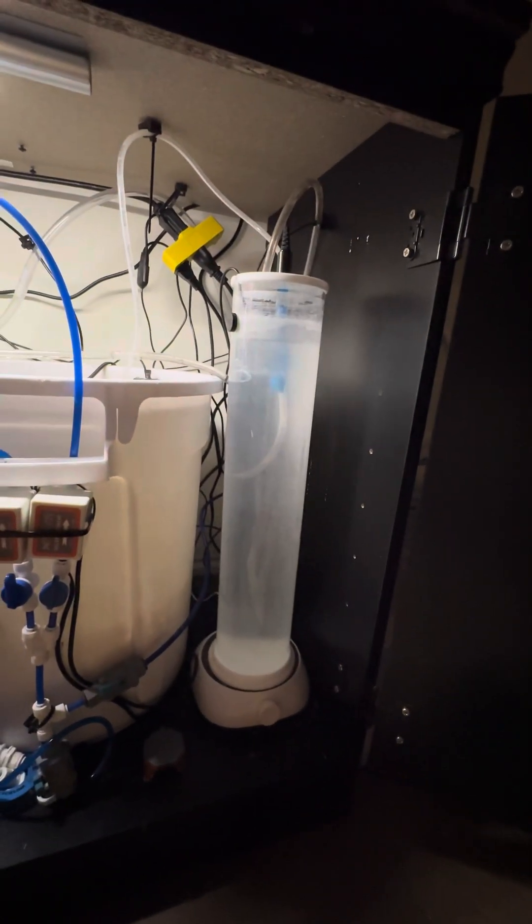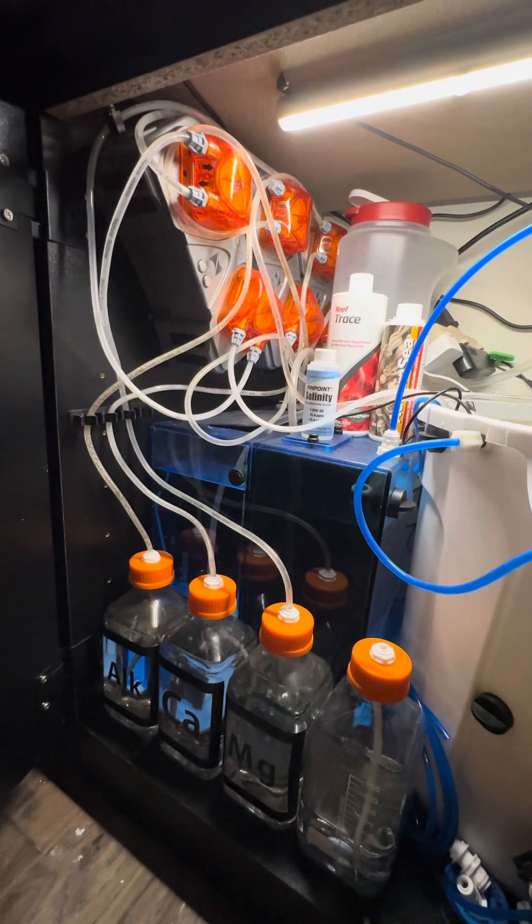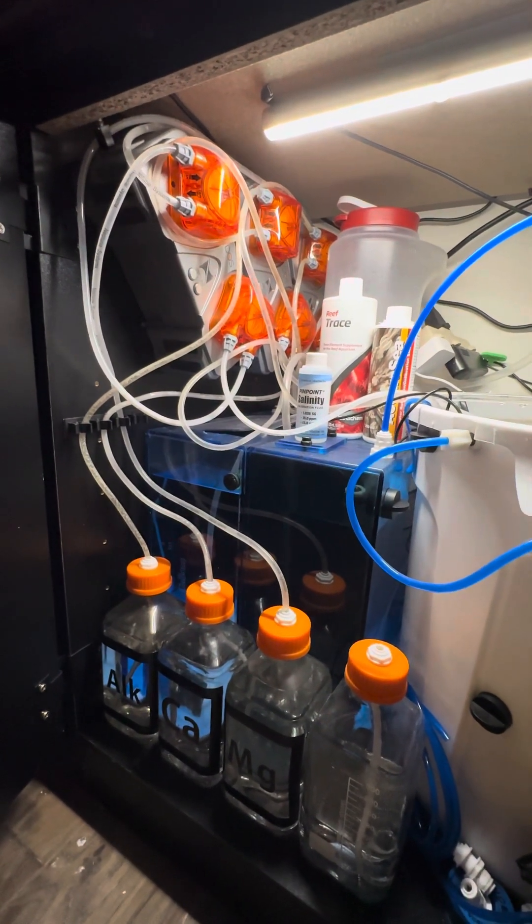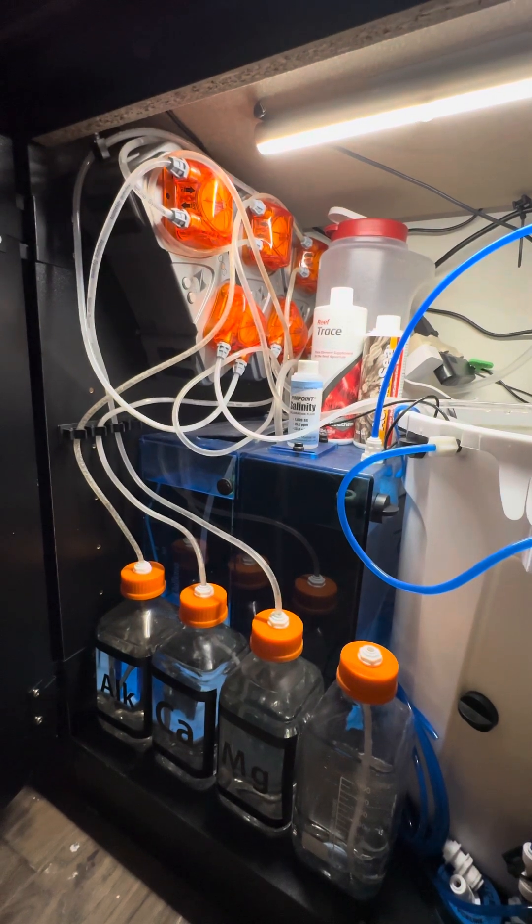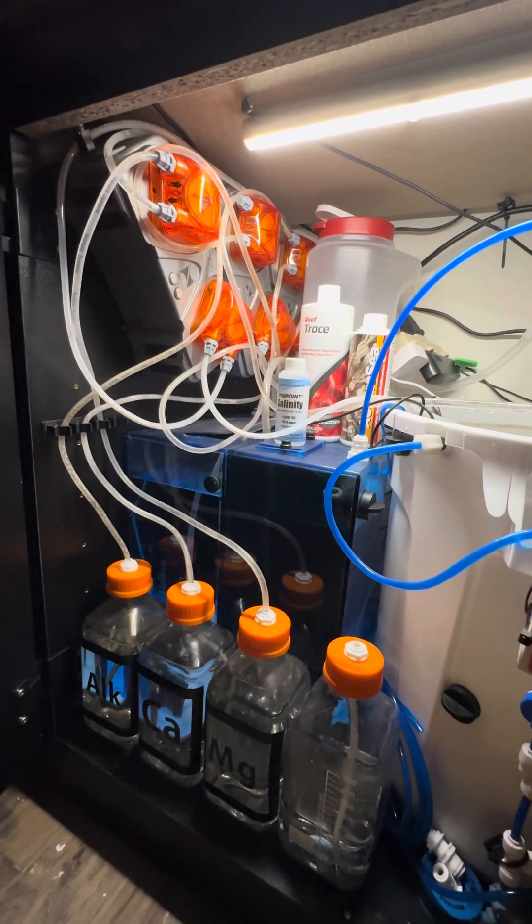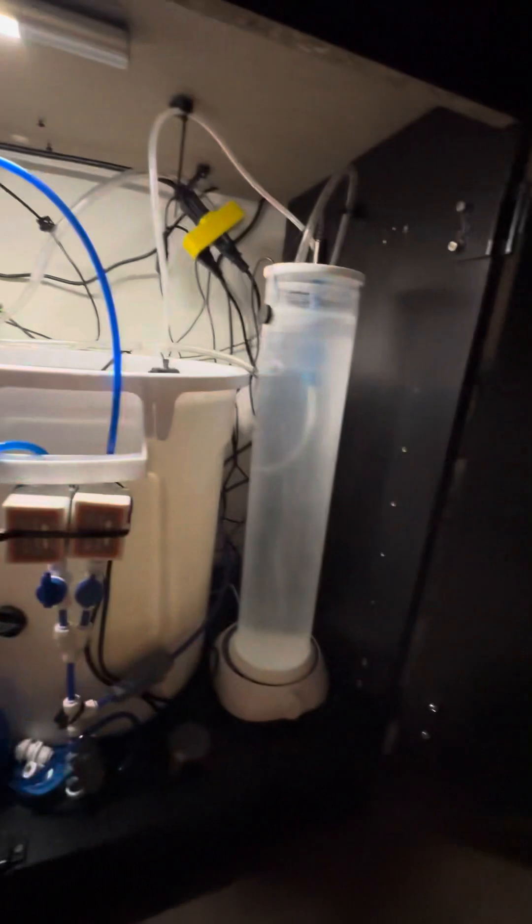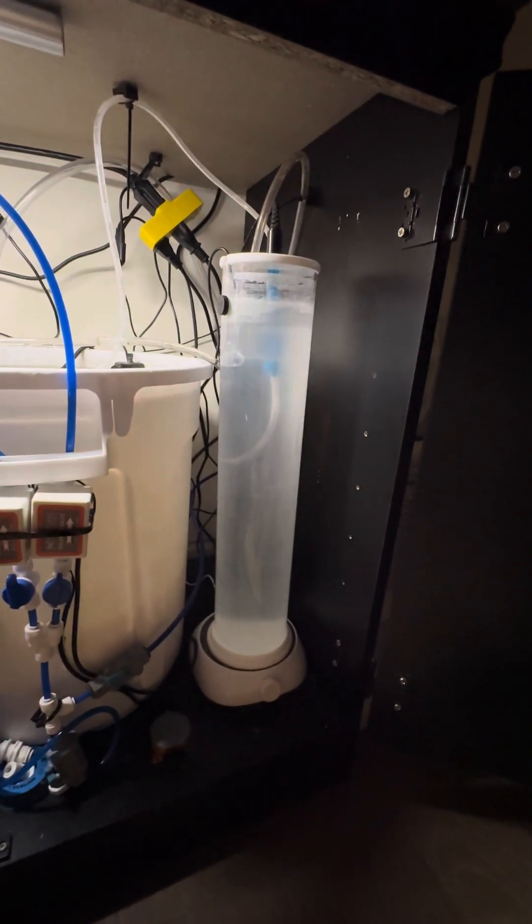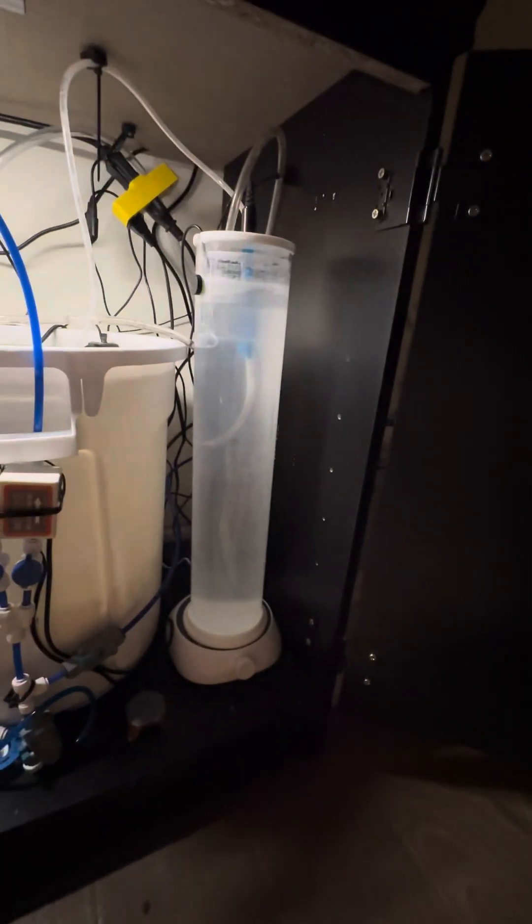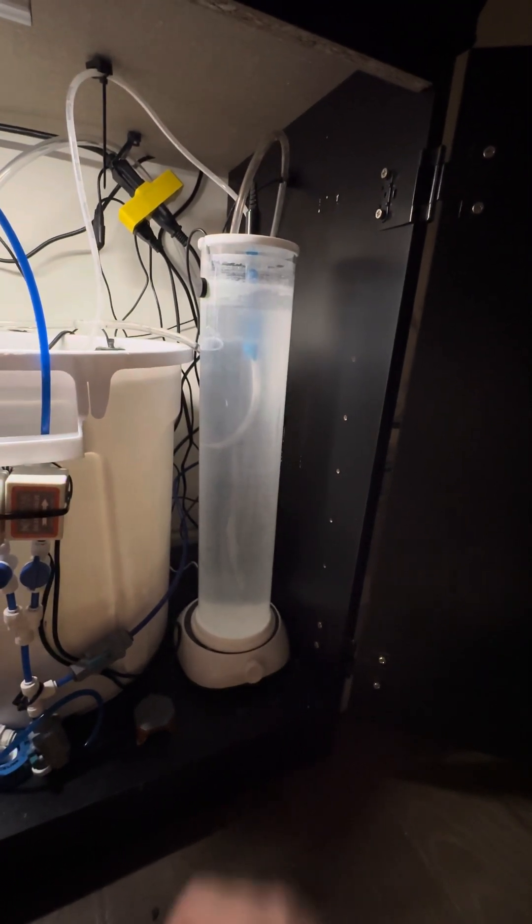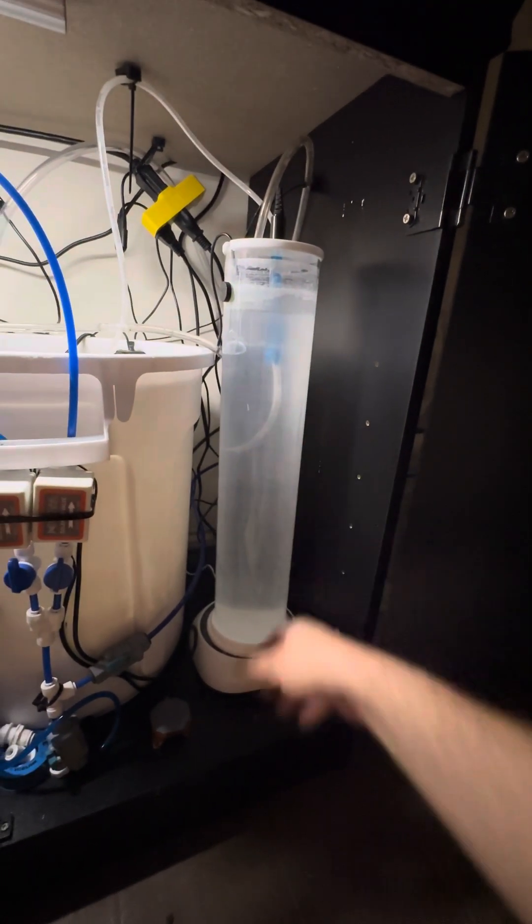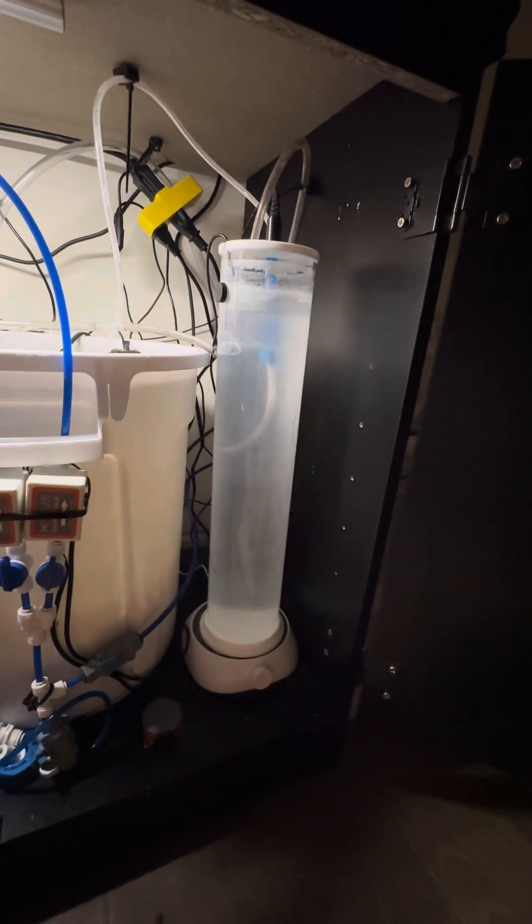Now I do have a regular ATO, a Tunze osmolator, that basically kicks on maybe once a day and it's in my reservoir there. But that's just a corrective action because I guess some days I must evaporate more than 2200 milliliters, which I have this set to dispense in the course of a day. And that's your only drawback.